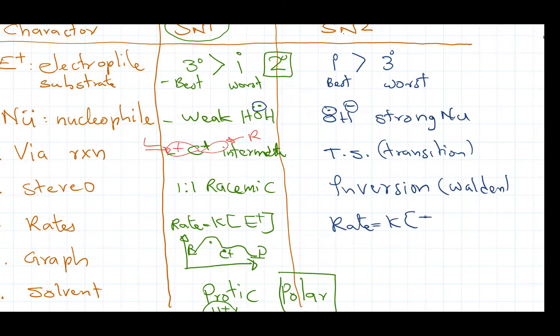The rate can be given as rate K times the constant, E plus, and NU minus. So it's bimolecular because it is SN2. So if it is SN2, it should have only one step. That's how we remember. And like I said, two people get married, so one marriage.